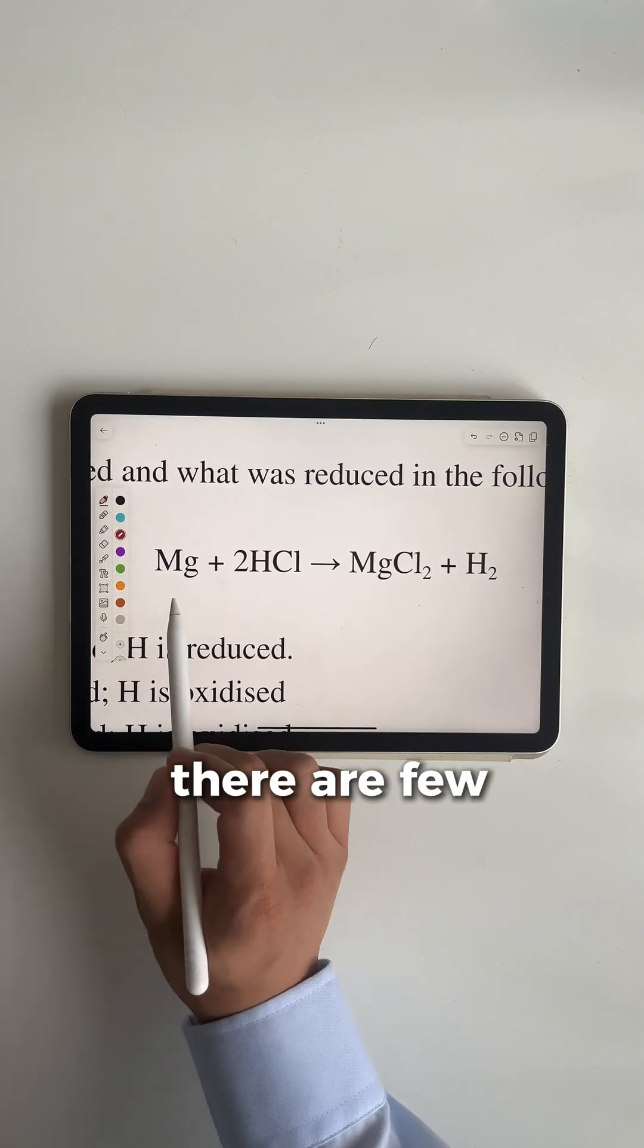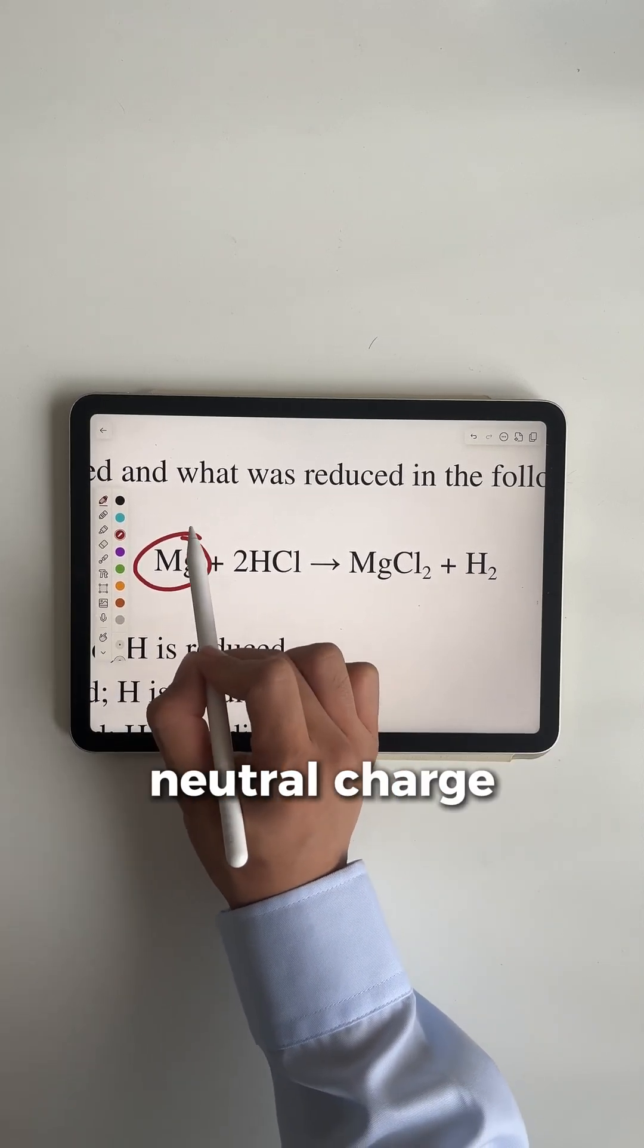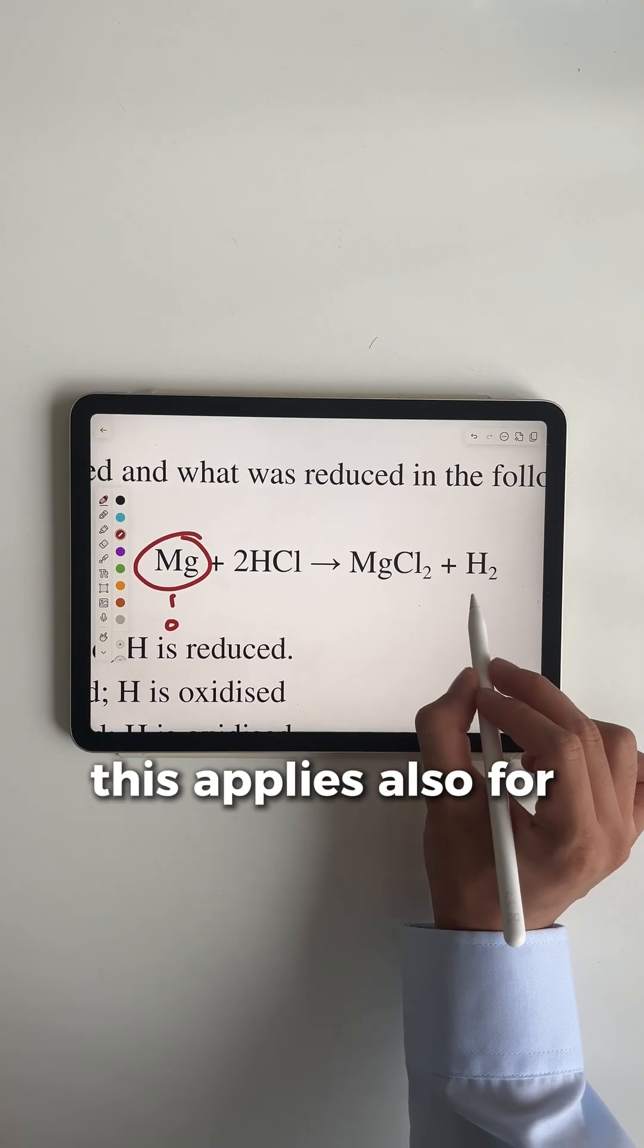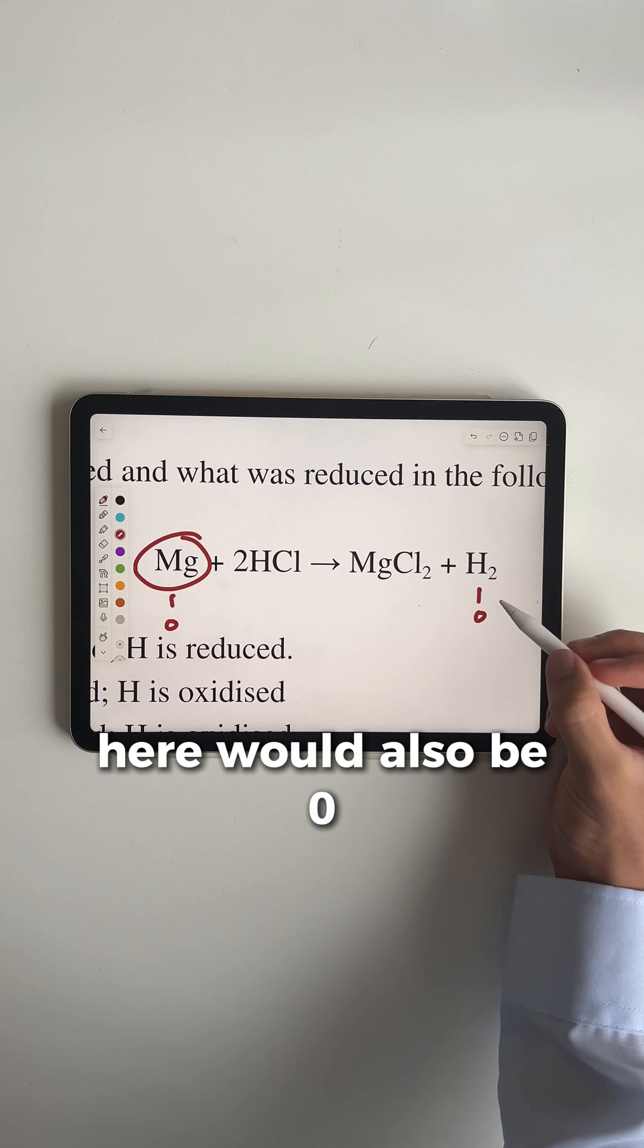To find oxidation states, there are a few rules we follow. One of which is when an element stands on its own, like this magnesium here, and it has a neutral charge, it means the oxidation state is zero. This applies also for diatomic molecules like hydrogen, so the oxidation state here would also be zero.